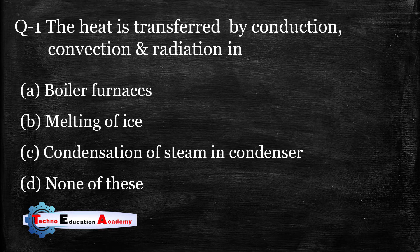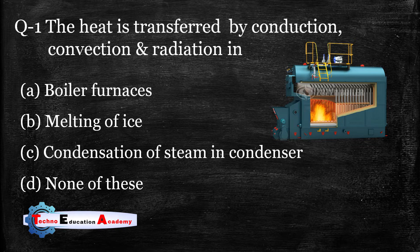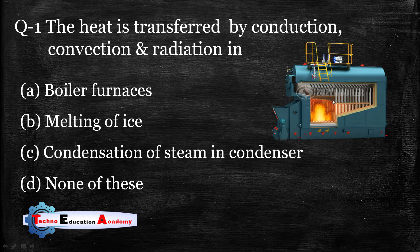Option A: boiler furnaces, option B: melting of ice, option C: condensation of steam in condenser, option D: none of these. In case of a boiler furnace, heat is transferred by radiation — where no medium is required — then by conduction when there is physical contact with the tubes, and finally by convection to the water inside the tubes. So the right answer is option A.